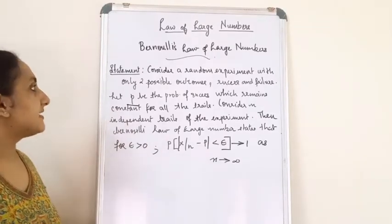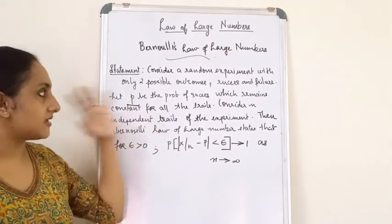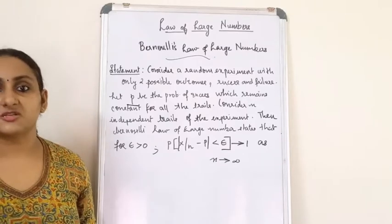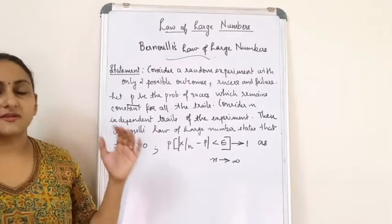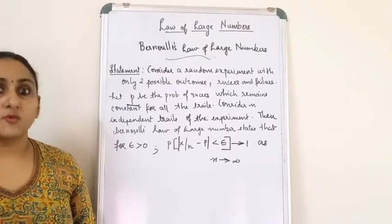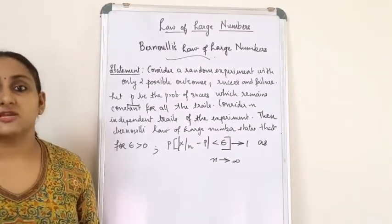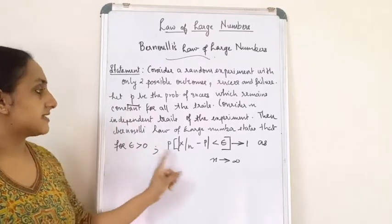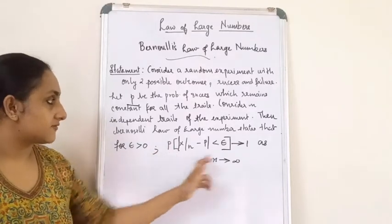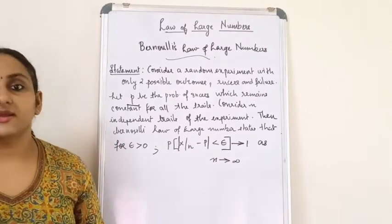The statement is a very large statement, but there is an easy method to study it — you have a lot of information in this statement. The proof is very simple. Since we have studied Chebyshev's inequality, with the help of Chebyshev's inequality we will prove this statement. That is, we will come to a point where we will prove that the probability of this term tends to 1 as n tends to infinity.